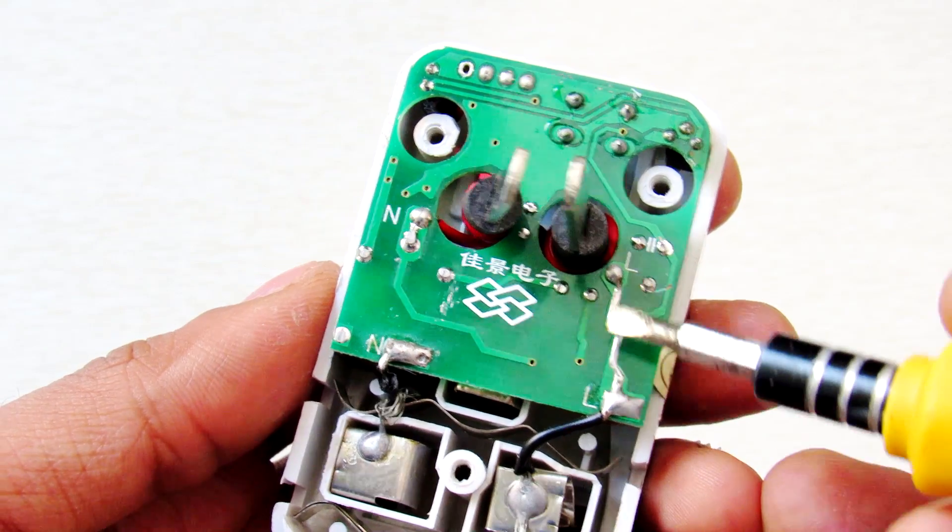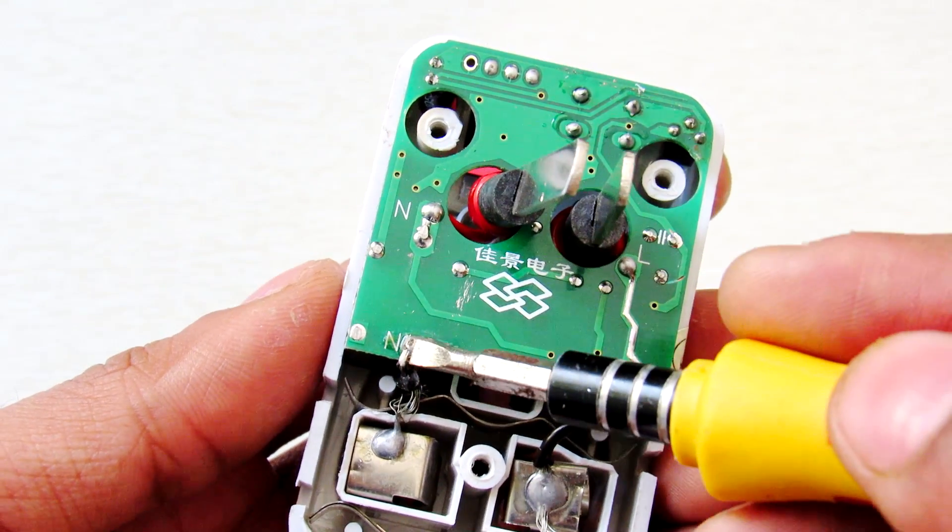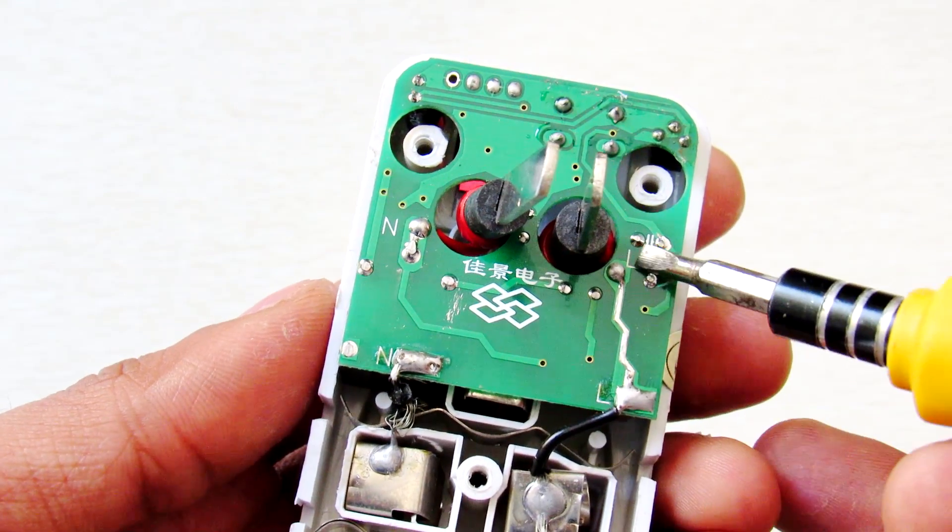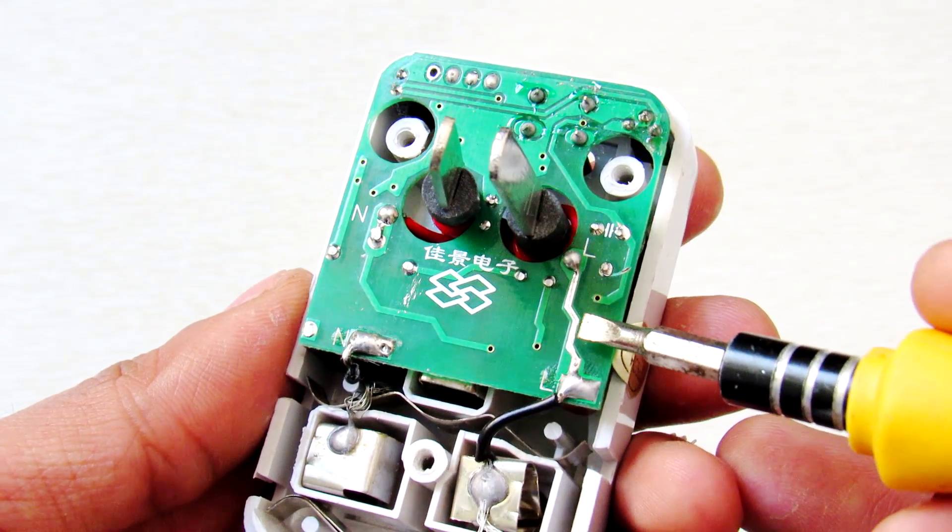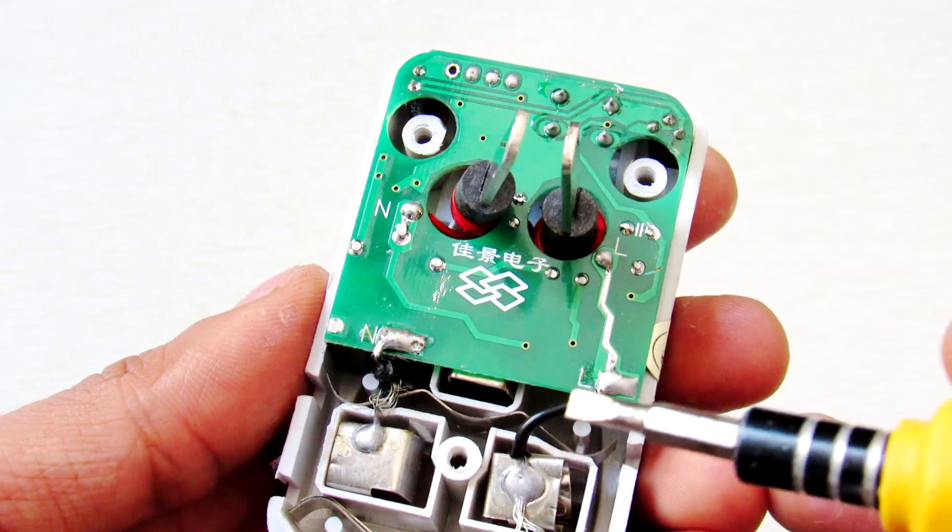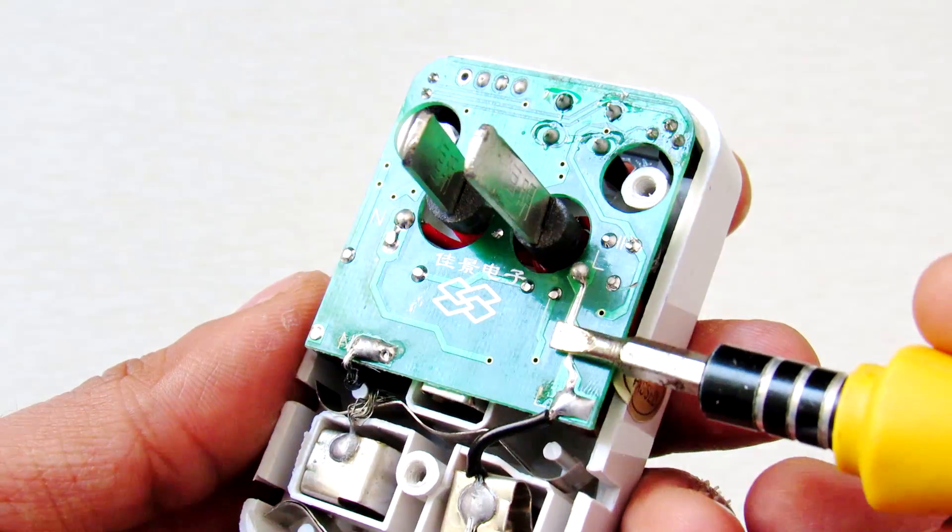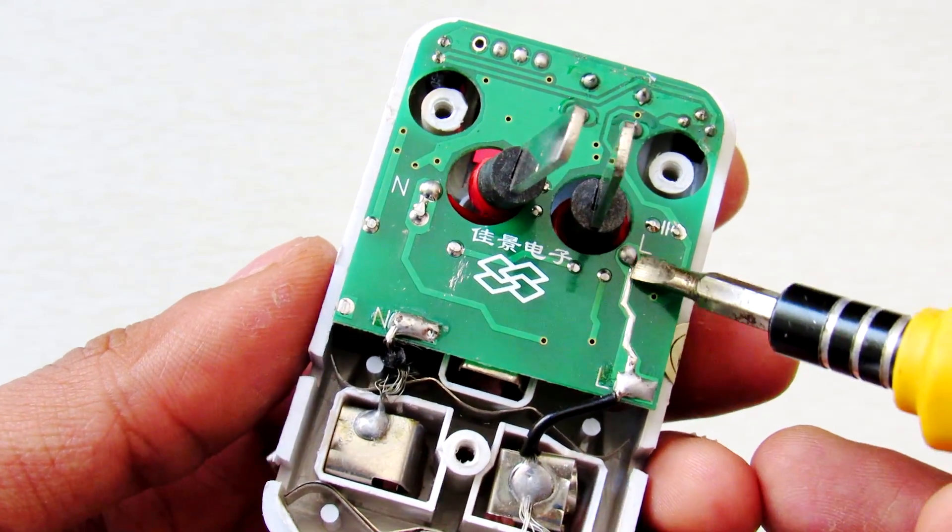If you want to control somewhat higher load, you should not rely on these tracks because they are pretty thin, as you can see, and small.